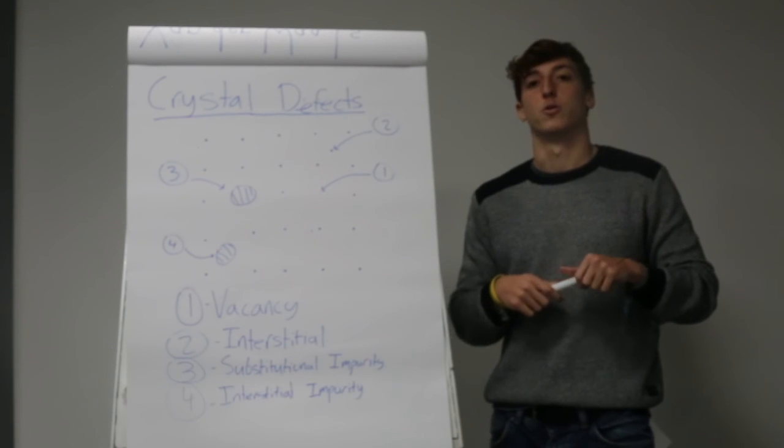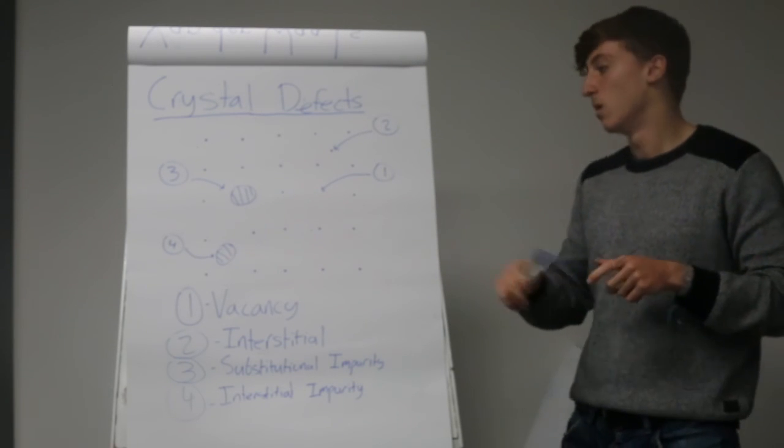Third of all, we have a substitutional impurity, which is a different atom replacing the original atom of the crystal, as shown in number 3.